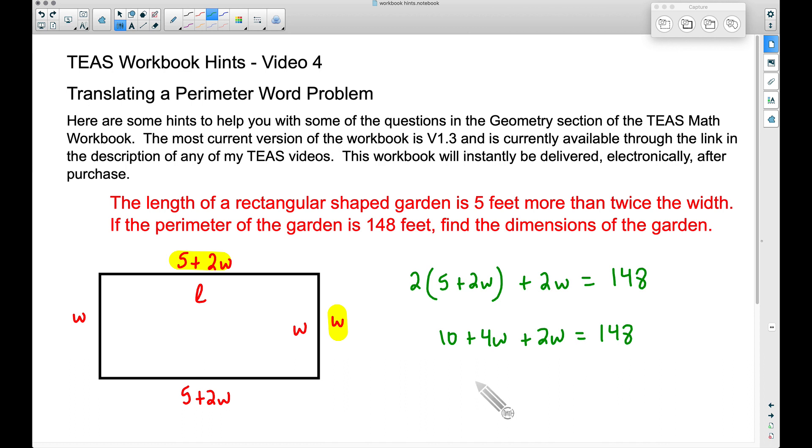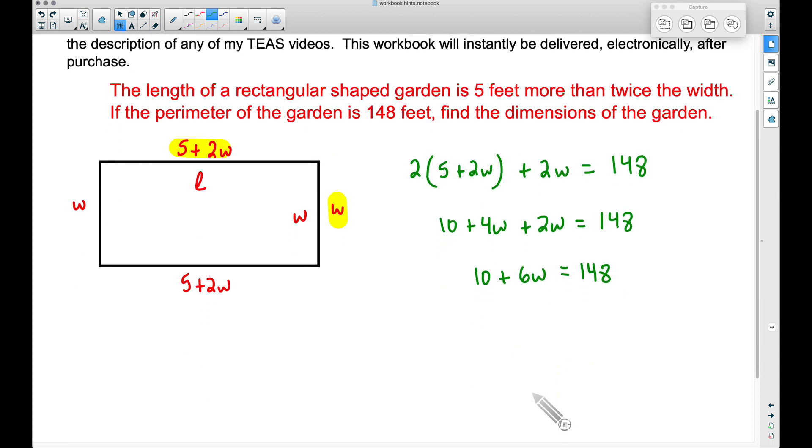Combining like terms on the left-hand side, we have 10 plus 6W—that's the 4W plus the 2W there—equals 148. Now let's work on getting this W by itself. I'm going to move the 10 over here and subtract 10 from both sides.